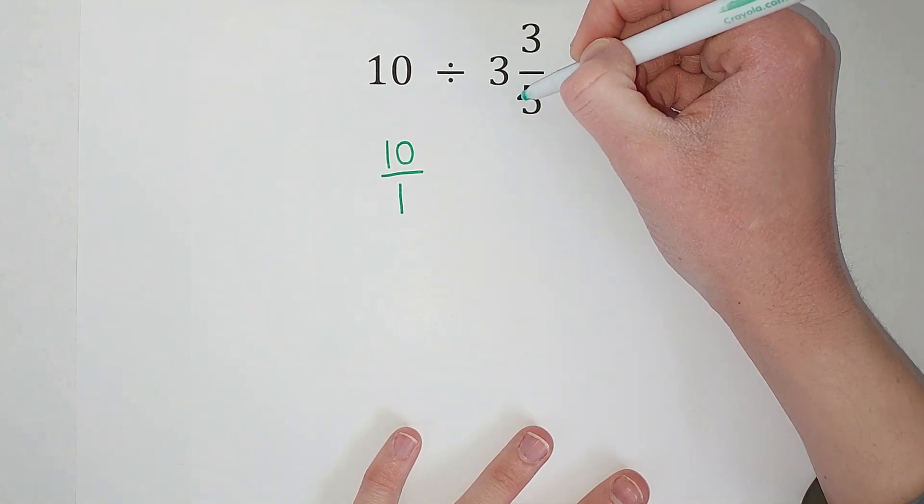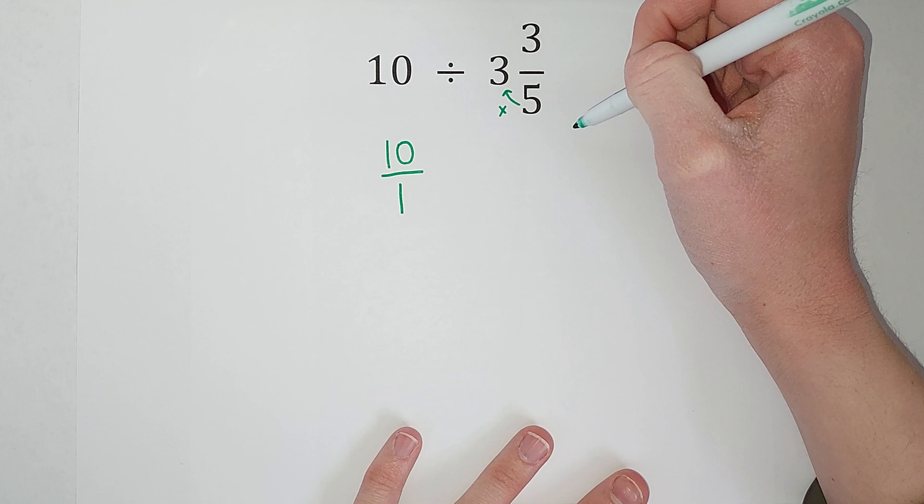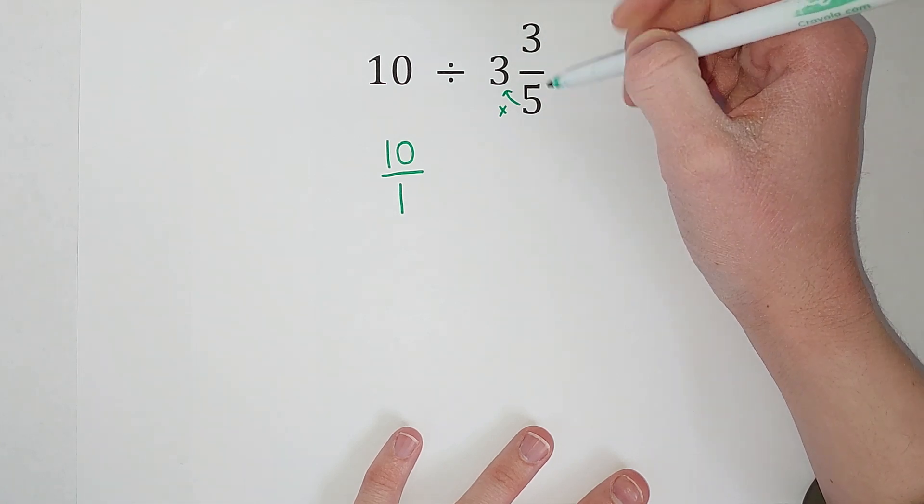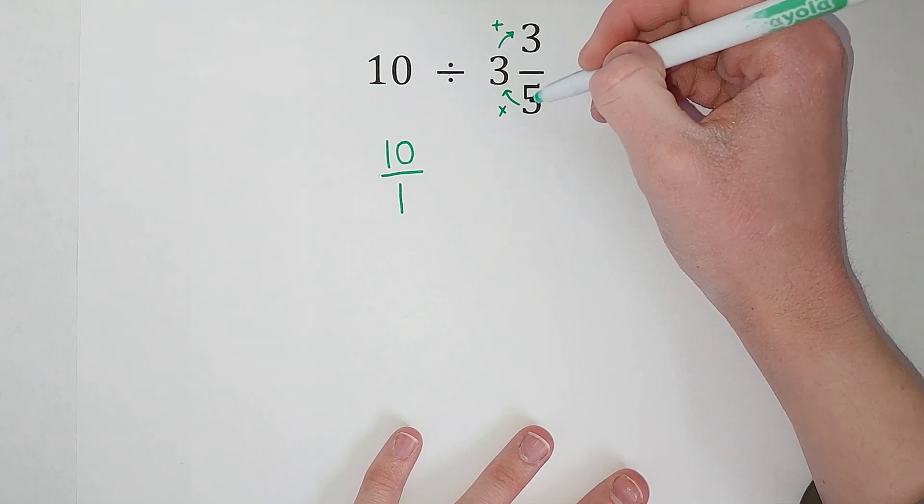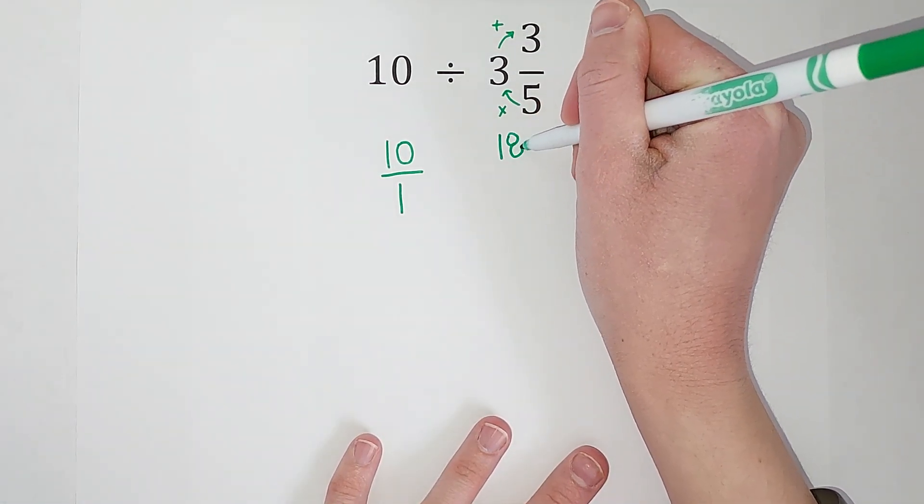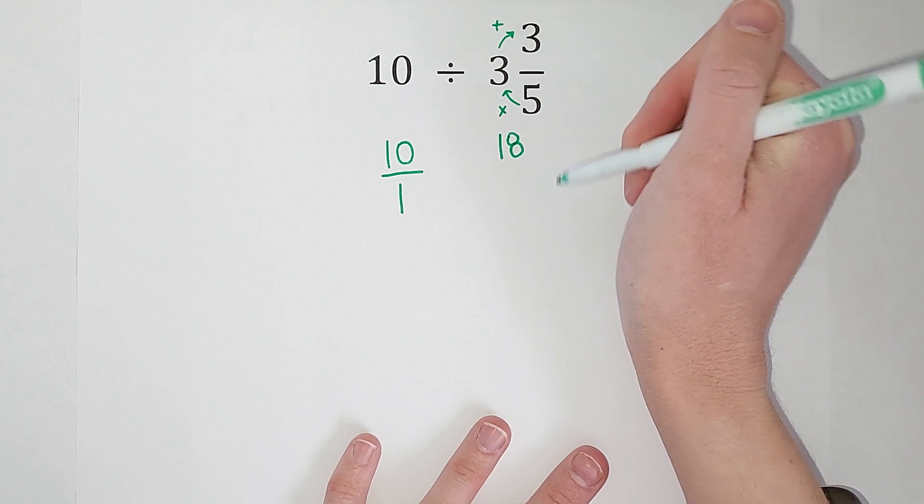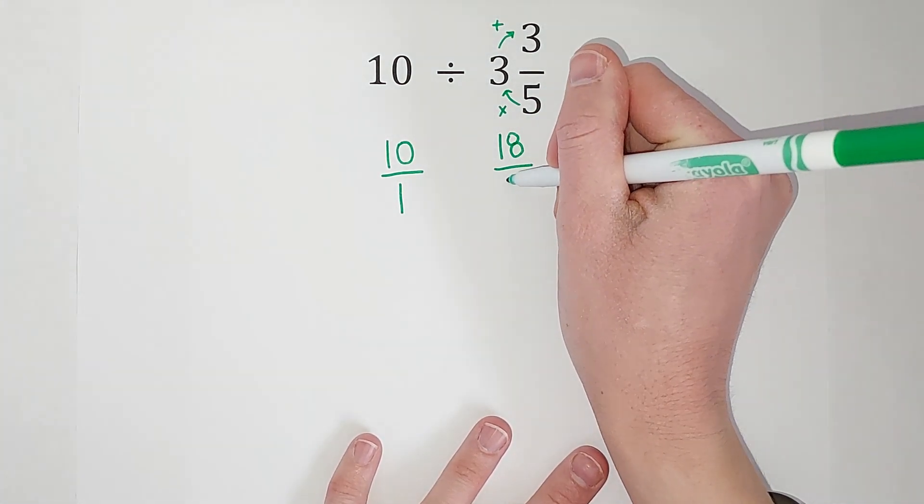So what we do is we take our denominator and we multiply it by the big number. So 5 times 3 gives me 15 and then we add the numerator. So 15 plus 3 gives me 18. That is the numerator for my improper fraction and my denominator stays the same. It's still 5.